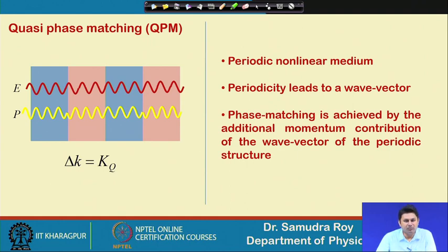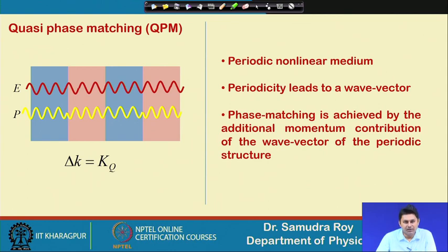In the previous case we found that the propagation constants of the fundamental field and second harmonic field are k1 and k2. If the quantity k2 minus 2k1, which equals delta k, is not equal to zero, we have a non-phase-matched condition. In order to make delta k equal to zero we put in a lot of effort. In birefringent crystals there is a possibility to do that by launching the fundamental electric field in a specific direction. Here instead, we use a nonlinear medium arranged so that over a period it has a periodic structure, and this periodic structure leads to a wave vector that compensates delta k.